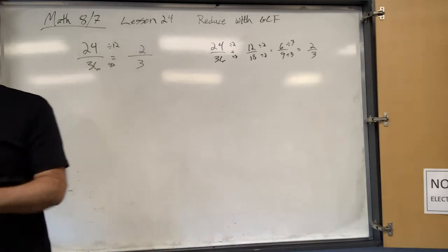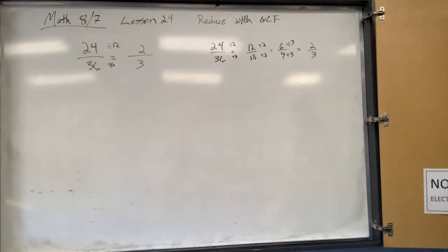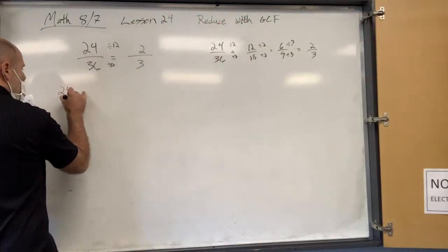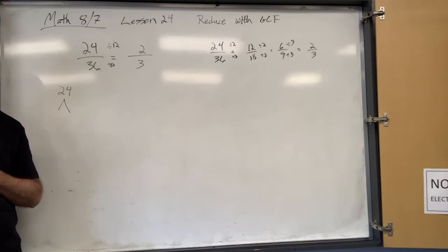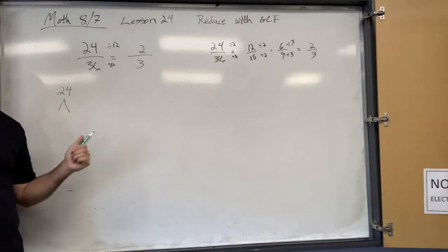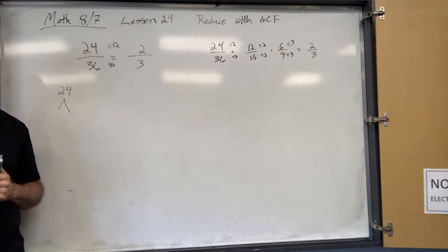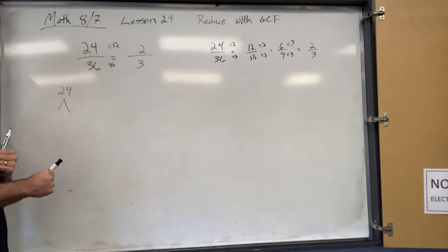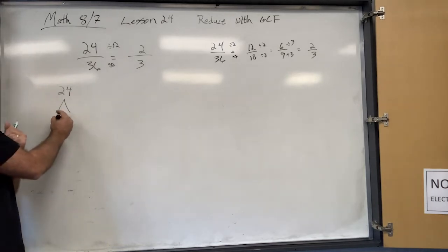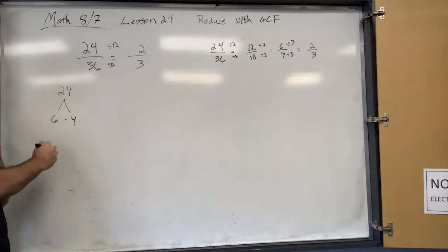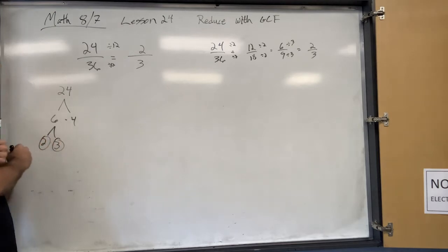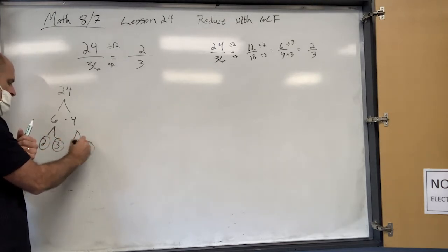Here's another way — you could list out the prime factors. Do you know the prime factors of 24? You start with 24 at the top, then split it into two numbers multiplied by each other. Six times four — you keep taking those apart: two times three, those are done because they're prime, and then two times two. So the prime factors of 24 are two times two times two times three.